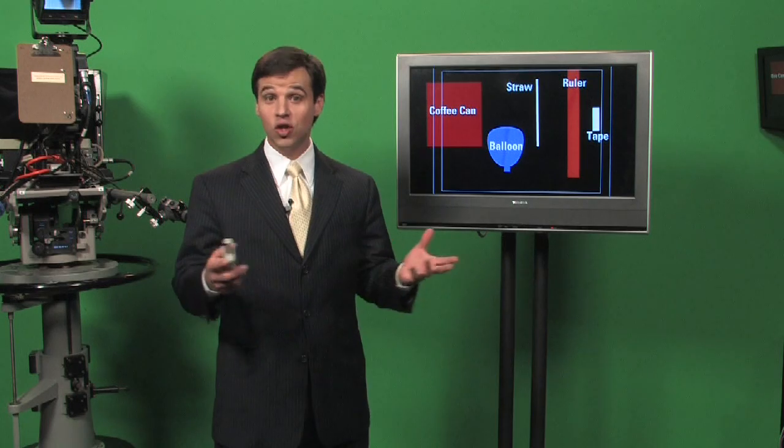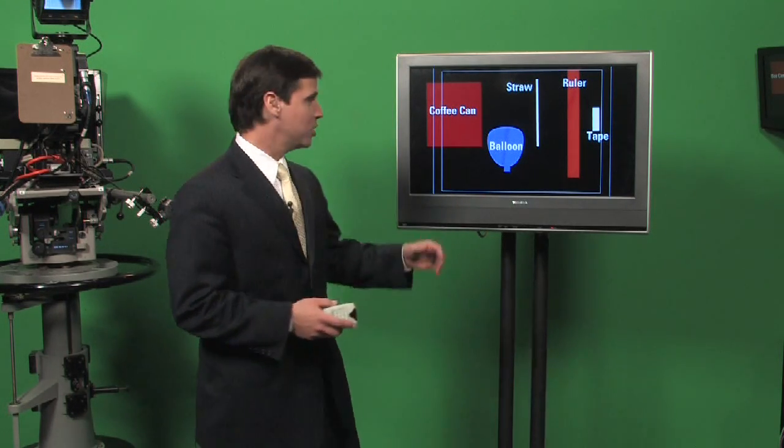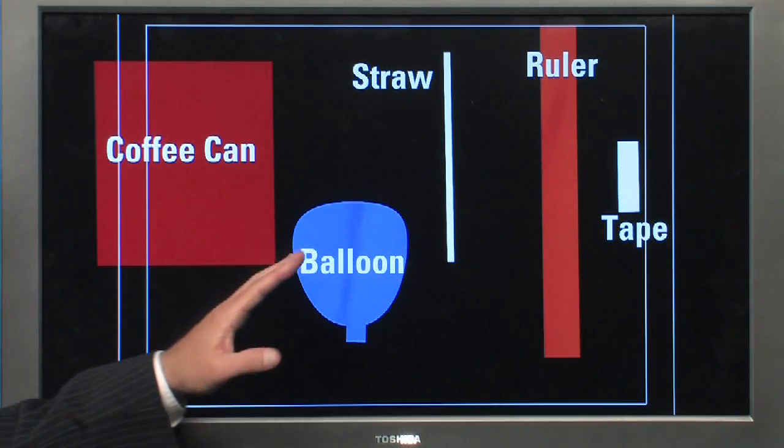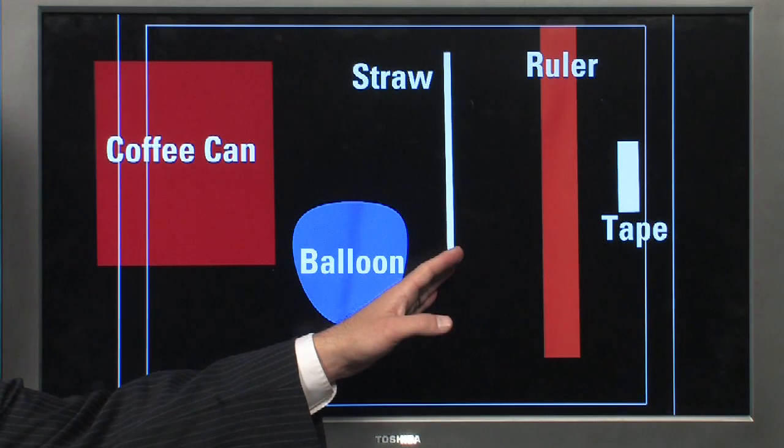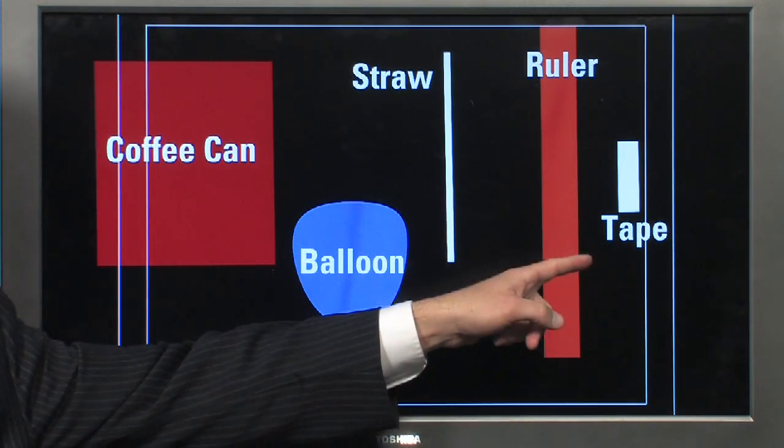Now this is a simple one that maybe a student could try, but basically what you need is a coffee can, a balloon, a straw, a ruler, and a piece of tape.